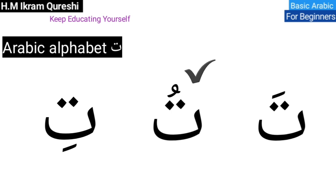Ta, fatha — Ta. Damma — Tu. Kasra — Ti. Now read this letter together: Ta, Tu, Ti. Ta, Tu, Ti.